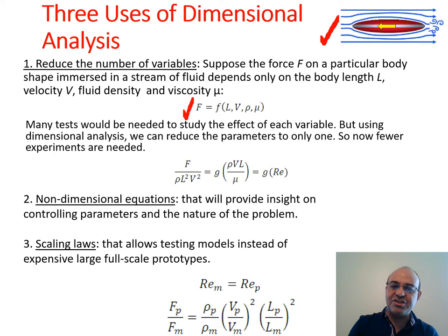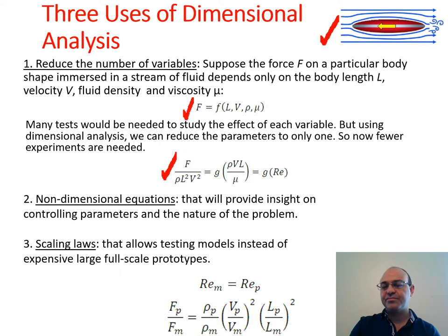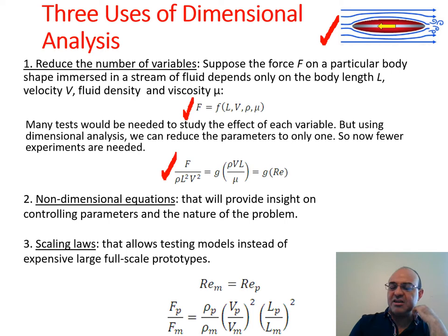We will soon see that by combining these variables together, we can show that force divided by density times length squared times velocity squared — this non-dimensional force group — is only a function of rho*V*L divided by mu, which is the Reynolds number in terms of the length of this object, analogous to a flat plate. This non-dimensional force over that denominator term can be regarded as a drag coefficient.